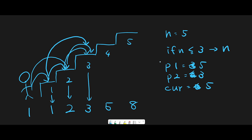Then we go to the next iteration. Calculate current: p1 plus p2 equals 8. And we have 8 ways — looks good. If we had stair 6, we'd use p1 and p2 again. Update p2 with p1: two steps back from stair 6 is stair 4, which is 5. Then p1 should be stair 5 from stair 6, which is 8 — update p1 with current. But since n equals 5, we finish the iteration and just return the current variable.